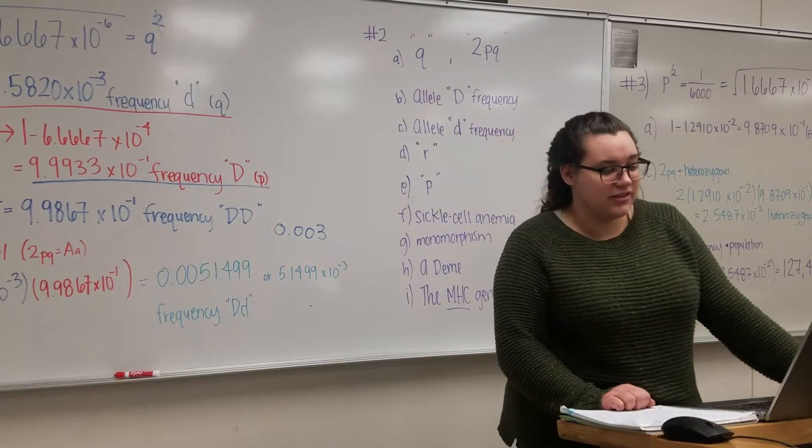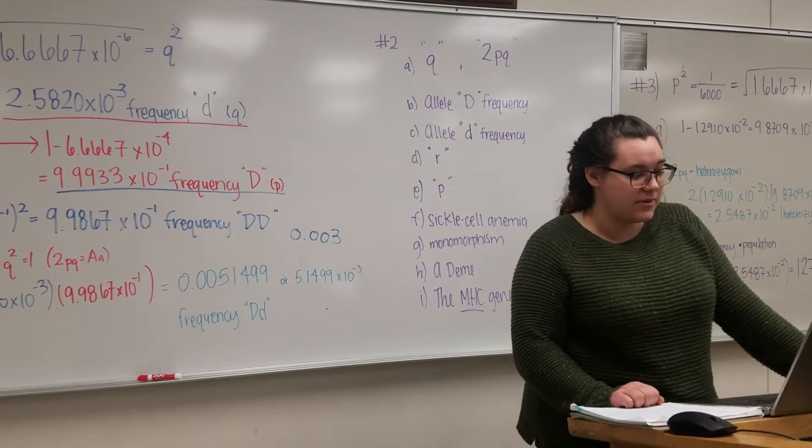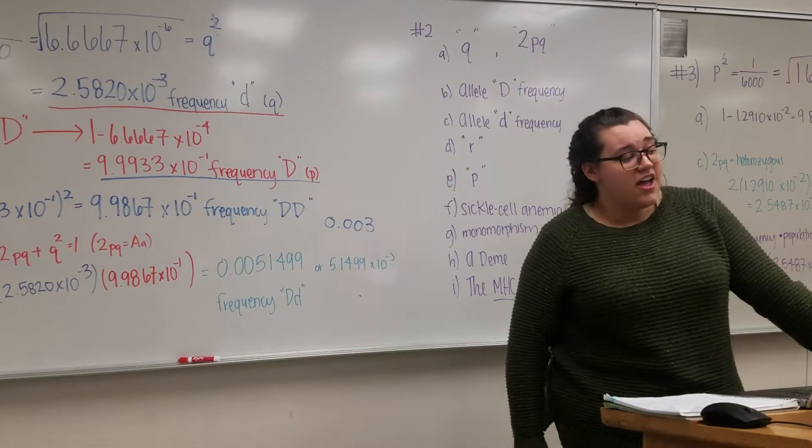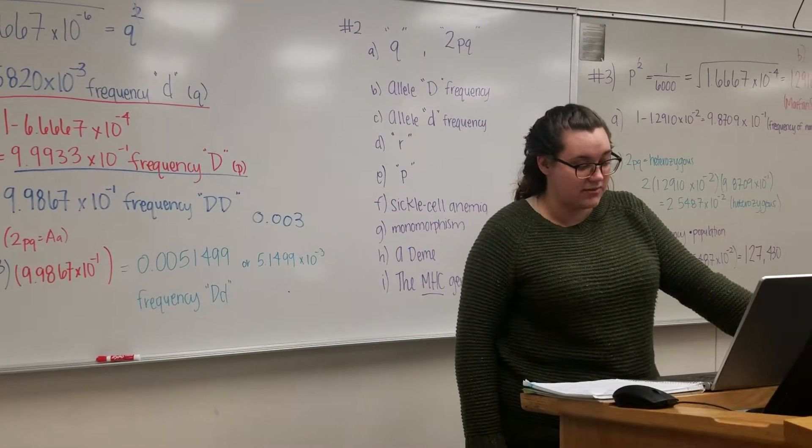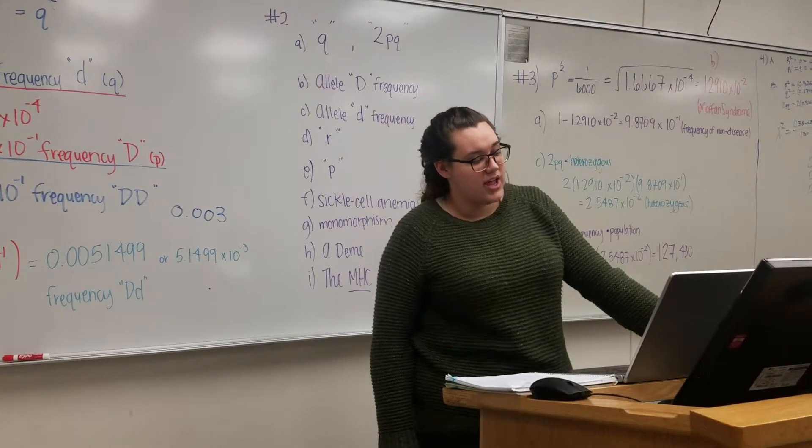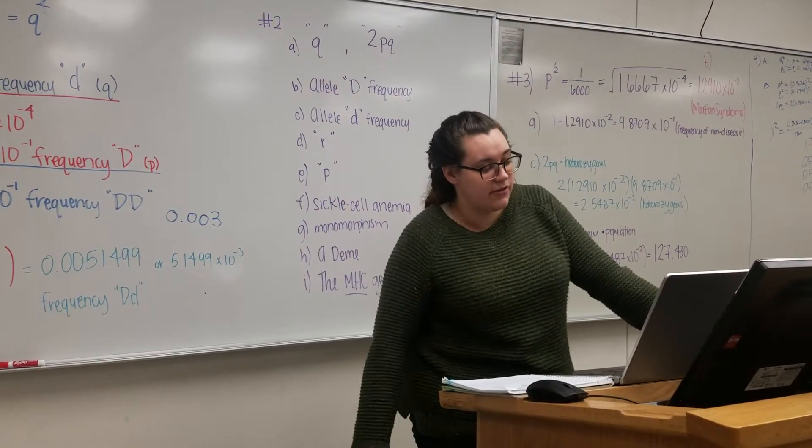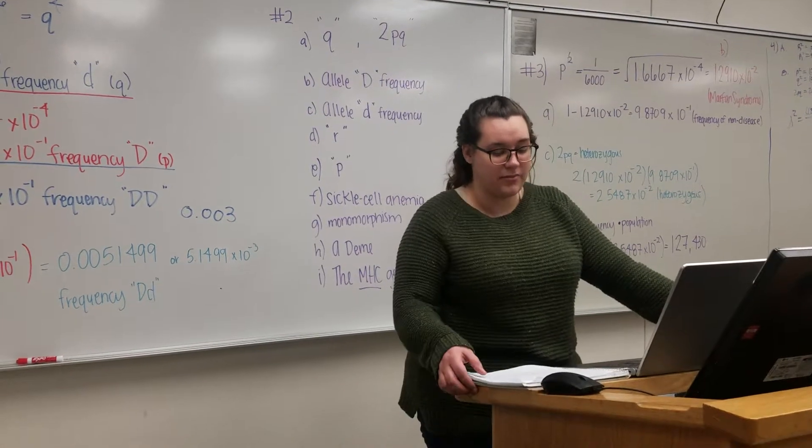A is asking for the frequency of the recessive d allele. B is asking for the dominant D allele, the frequency of the homozygous dominant allele genotype. And then D is asking for what is the frequency of the heterozygous D genotype in the population.